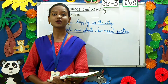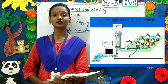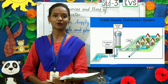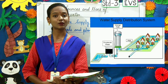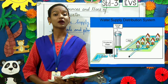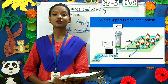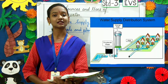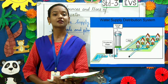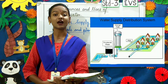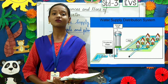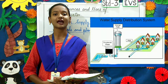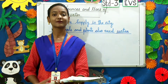First, the water works department collects or gathers water from different sources, be it surface water or underground water. After collecting the water, they treat the water to get rid of the impurities and germs contained in it. After treating the water, it is stored in large tanks, and then the water works department supplies water through pipelines to our homes and society.